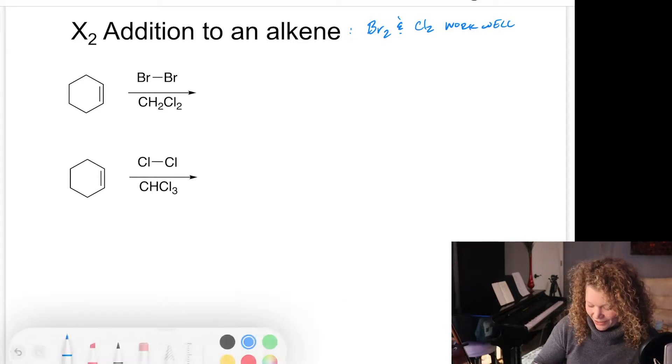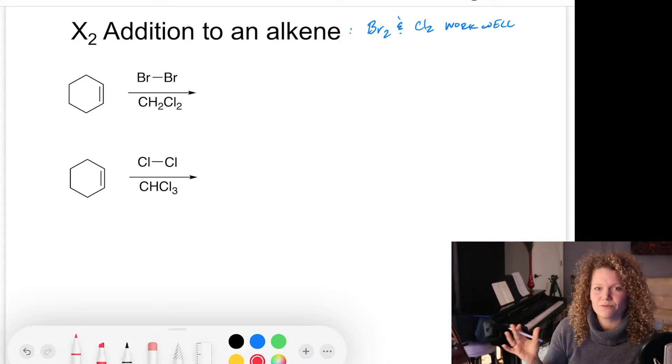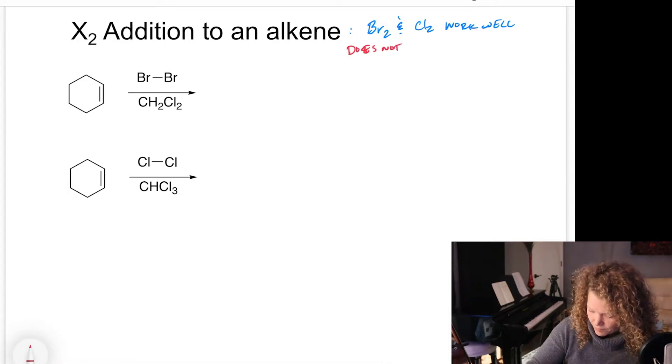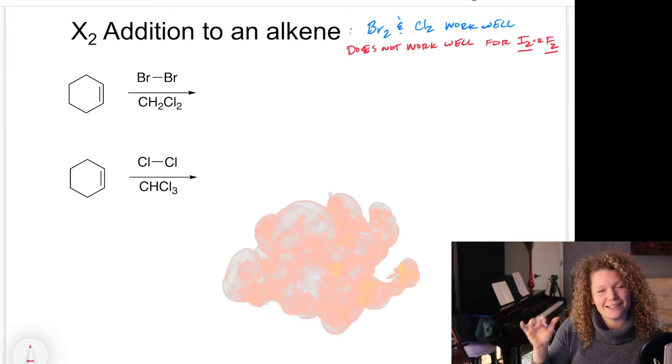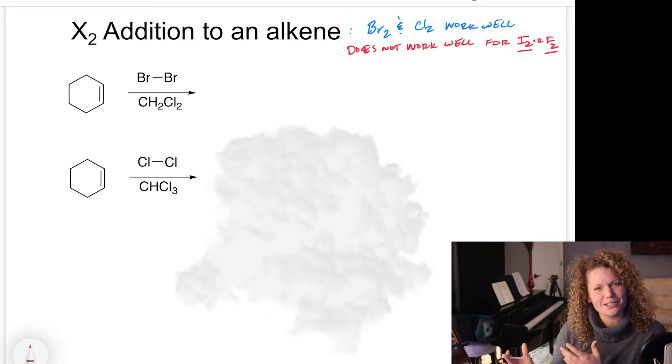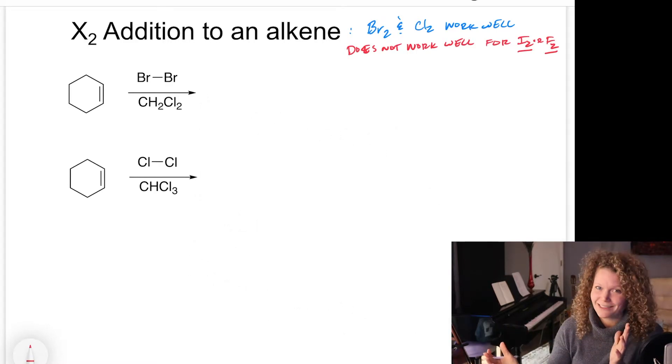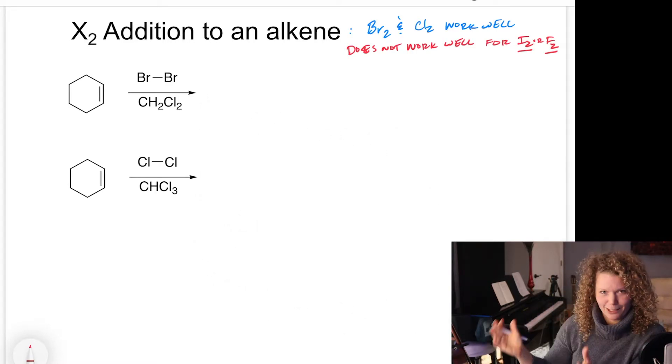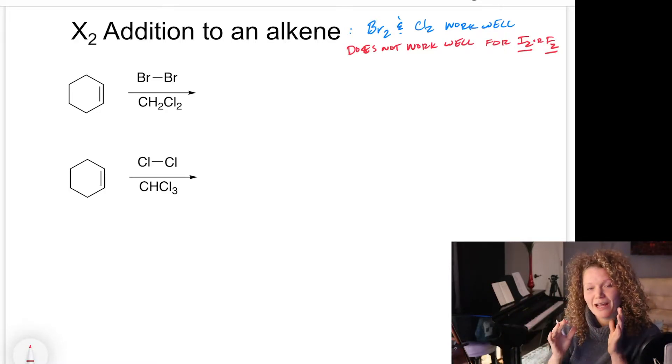I want to make a little note here that this doesn't work well for I2, for iodine or for fluorine. This has to do with the product that you get for iodine is not stable and actually fluorine is super reactive and that reaction is actually explosive. So those two are not going to work, iodine that works, product not stable, fluorine, explosive because it's so reactive. We're going to be focusing on Br2 and Cl2.